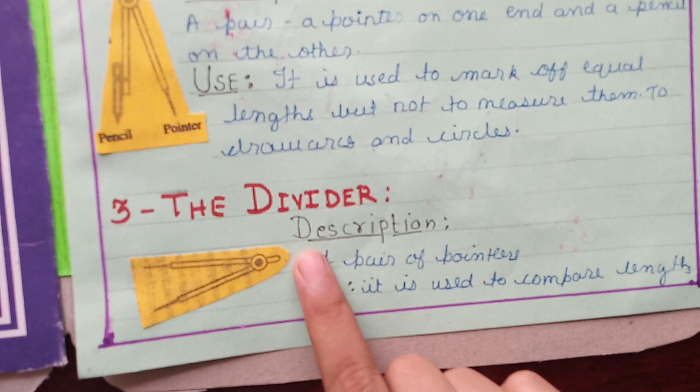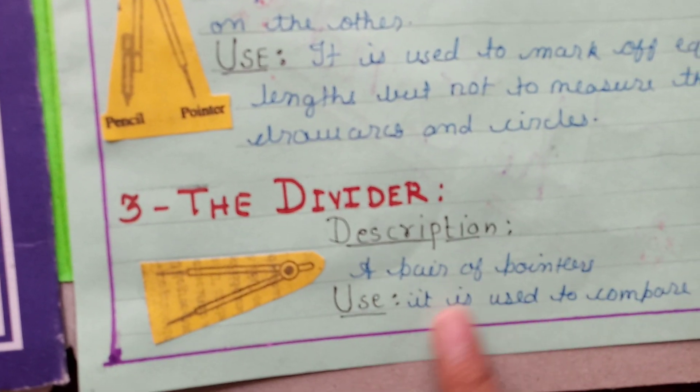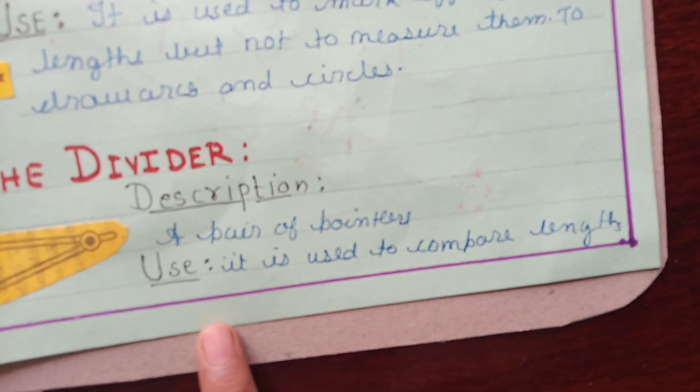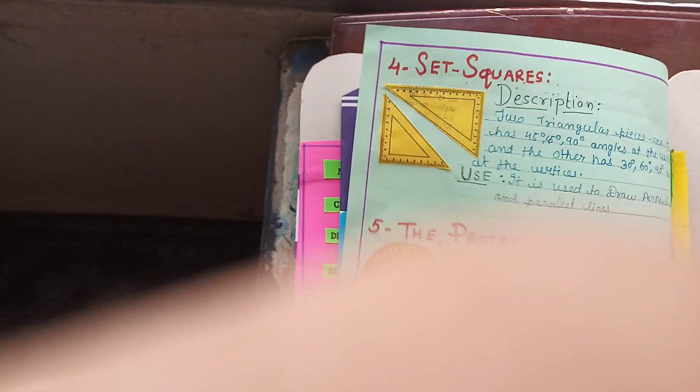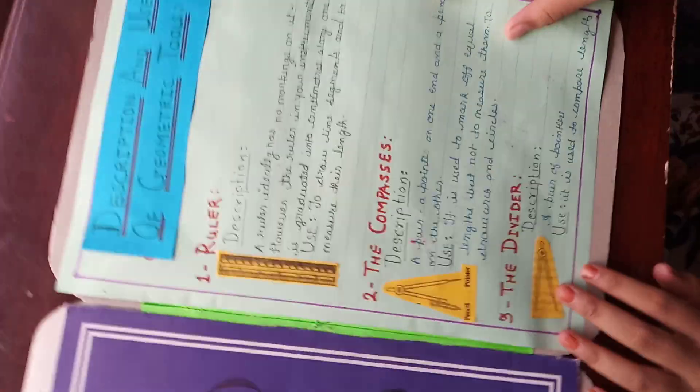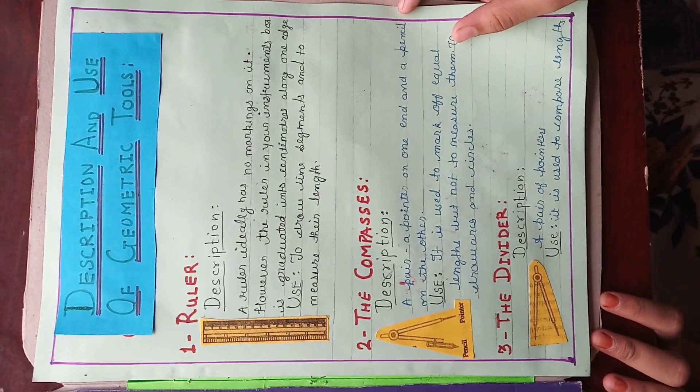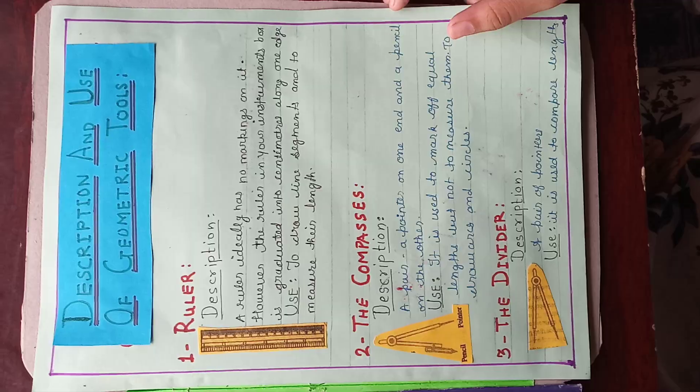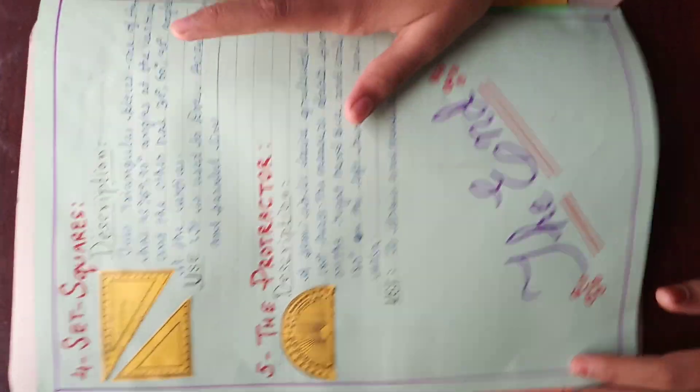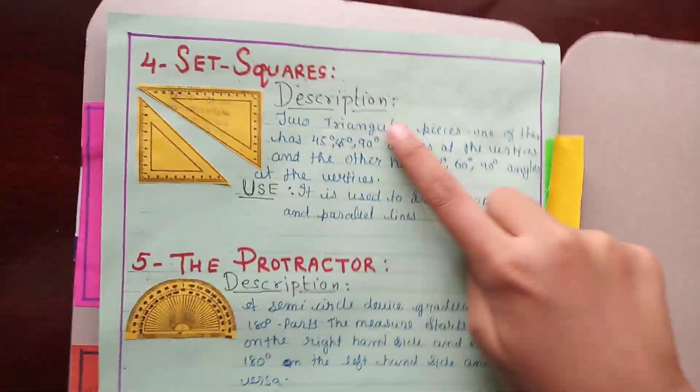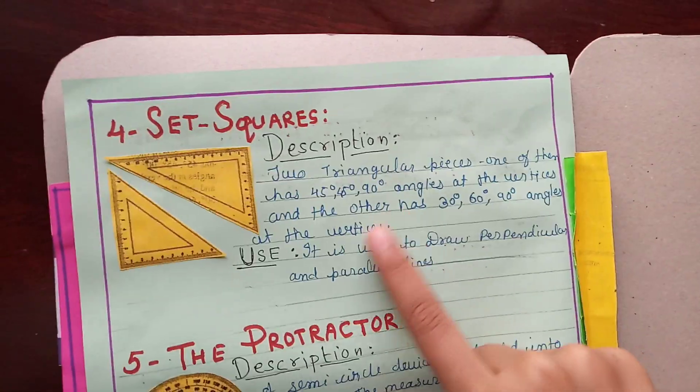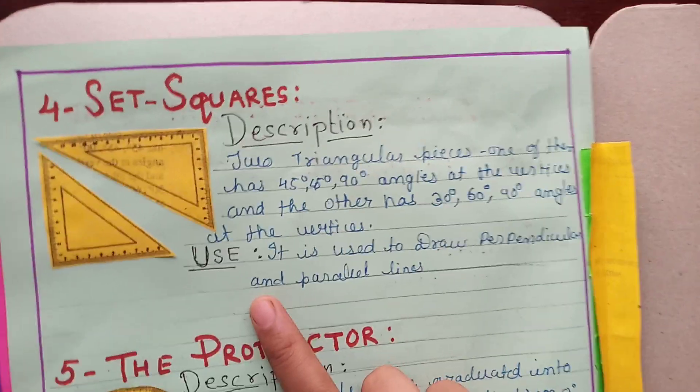The next is the divider. Here is the description of divider. And here is the use of divider. The next is set squares. And here is the description of set squares. And here is the use of set squares.